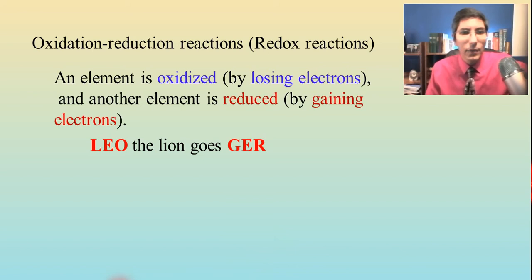If you have trouble remembering that, this mnemonic aid might help you. Leo the lion goes ger. Now, what in the world does that mean? Well, it tells us that losing electrons is oxidation. So that's the Leo part of this. And then the ger is that gaining electrons is reduction.